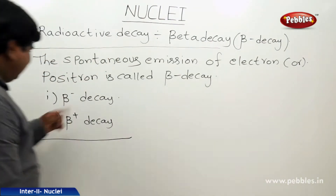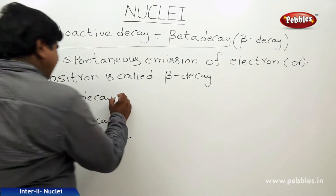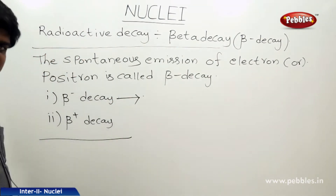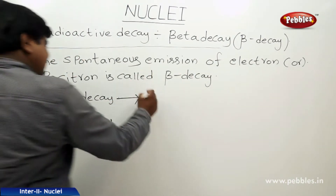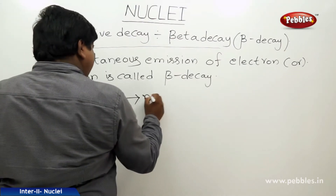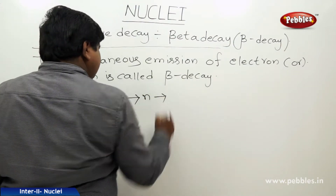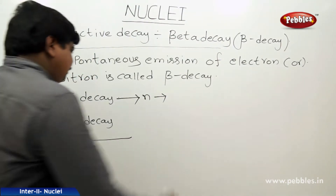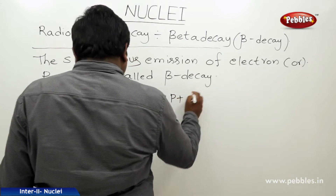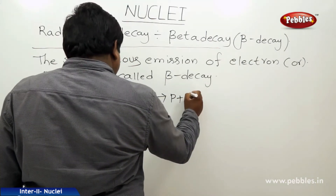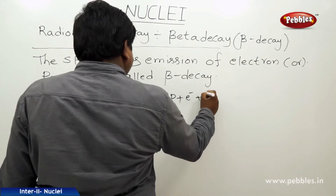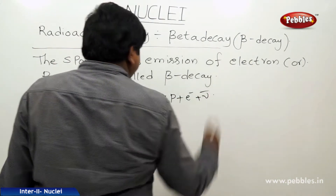In beta minus decay, the reaction involves a neutron. This neutron splits into a proton plus an electron plus an anti-neutrino (nu-bar).